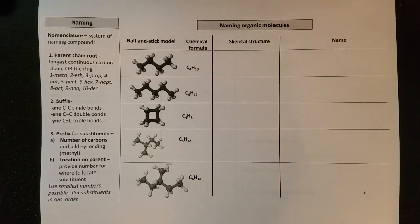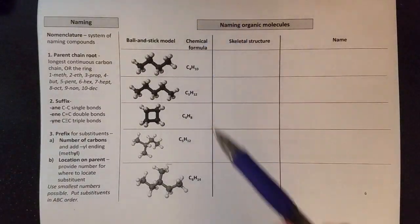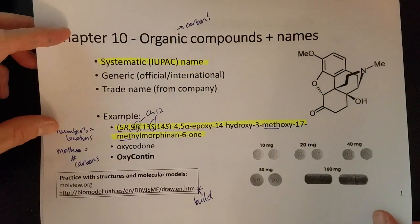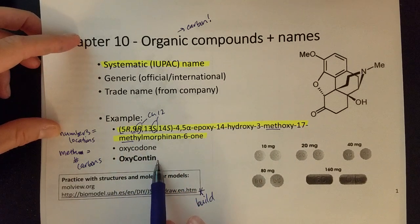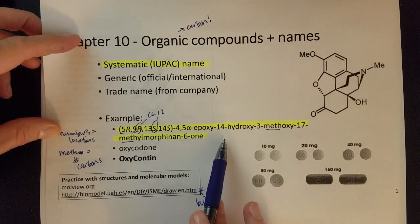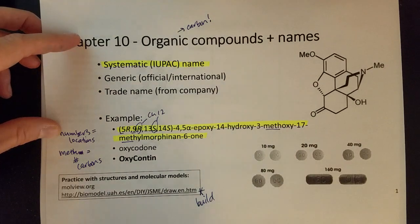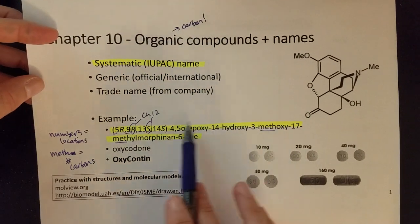We get to work on naming now. Just to keep things in perspective, this was our first slide in this chapter and we saw this long crazy name for oxycontin. We will not do anything near that challenging, but some simple things like methane we will work on. So we're working on the very basics of this naming language.